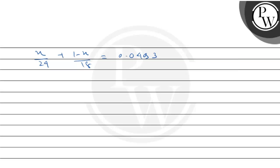Now we have to solve this equation. First, take the LCM, which is 24 into 18, which is 432. So this becomes 18x plus 24 minus 24x is equal to 0.0493 into 432.